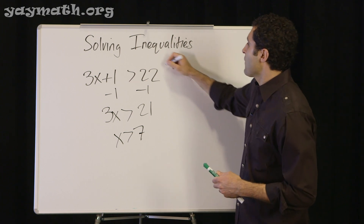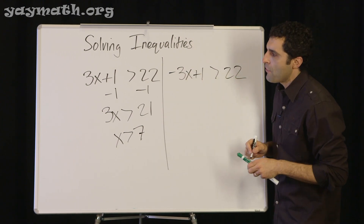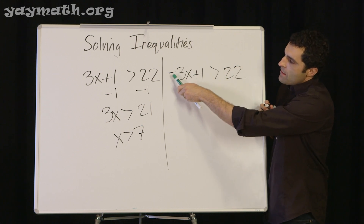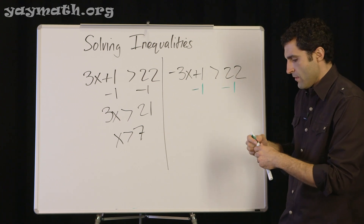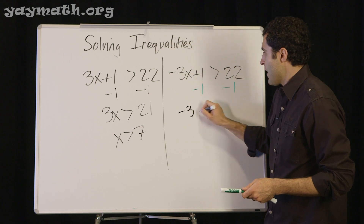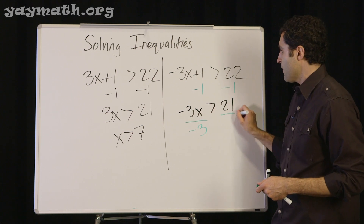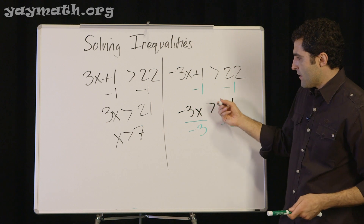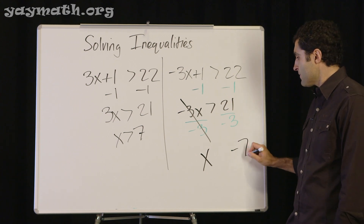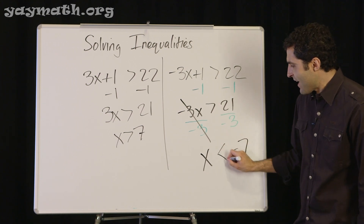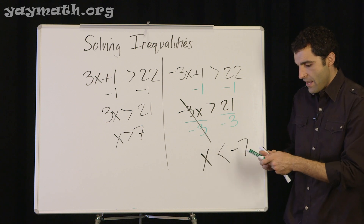Now let's try the same problem with a negative: -3x + 1 > 22. It's the same process — subtract one from both sides: -3x > 21. Now we divide both sides by negative three. Negative three divided by itself is one, so x, and 21 divided by negative three is negative seven. And don't forget to switch the sign because we divided by a negative — so x < -7.